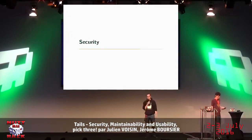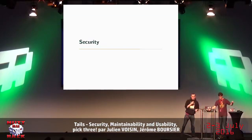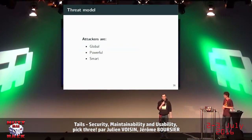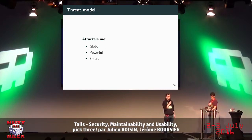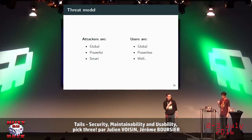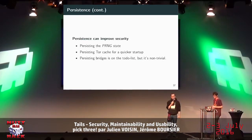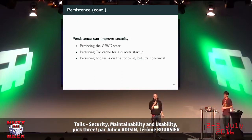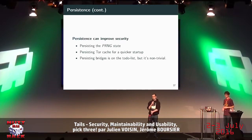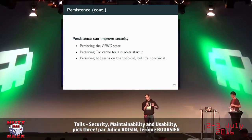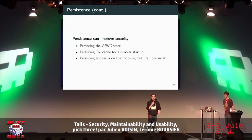Let's talk about security. As mentioned earlier, the attackers are global, powerful, and smart — like the NSA. Tails users are global and largely powerless. Persistence has been seen as a security feature: for example you can persist pseudo-random number generator state to differentiate entropy sources among Tails users. You can also persist a Tor cache for a quicker startup, since bootstrapping Tor takes a long time and users don't like to wait.